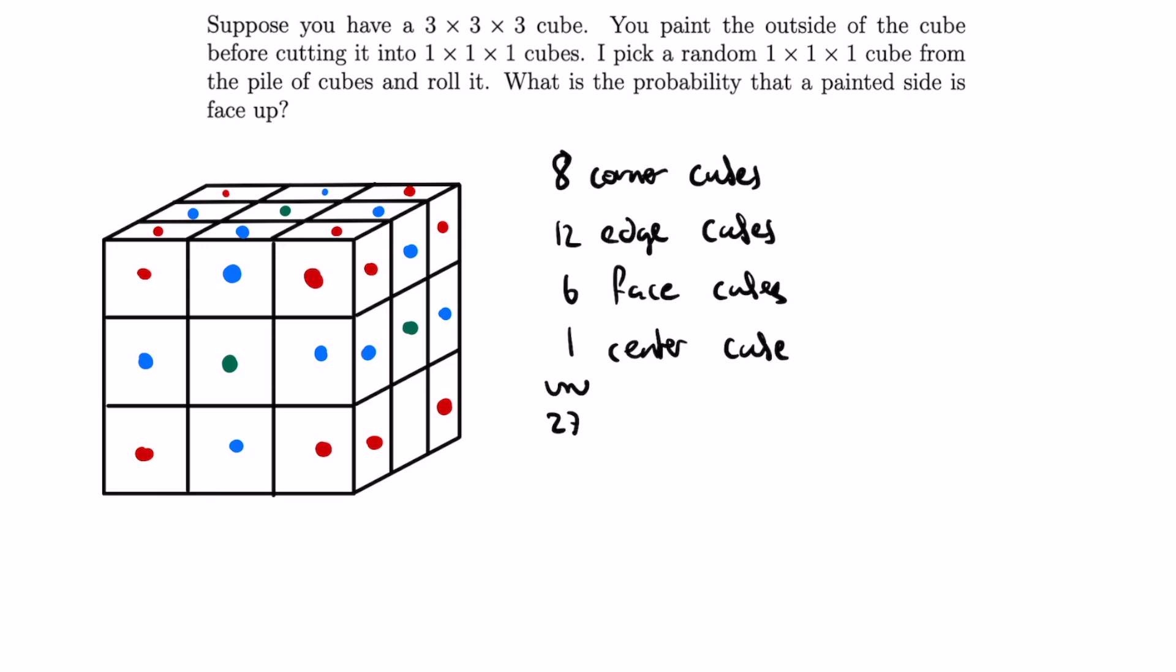The probability of picking a corner cube is therefore 8 over 27, and if we pick a corner cube, the probability of it landing with a painted side being face up is 1 half, since there are 3 painted sides and 3 non-painted sides.